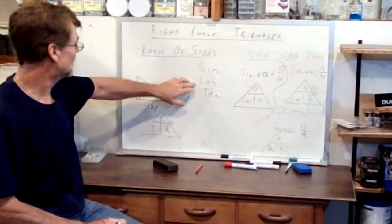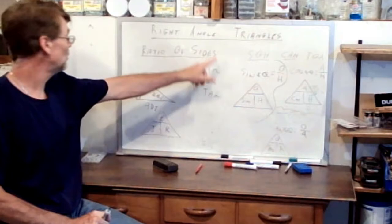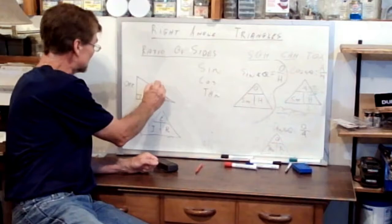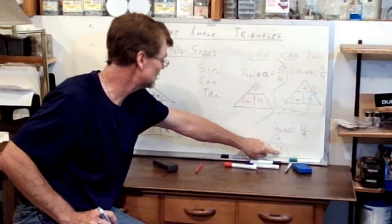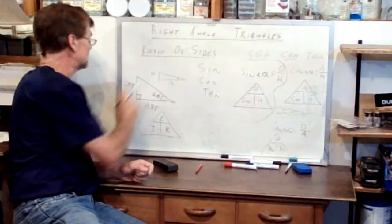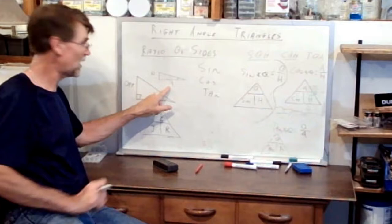So there are three functions — sine, cosine, tan — and they describe how the angle relates to the ratio between a couple of the sides. If the angle is small, let's look at tan for example: the relationship between opposite and adjacent. With a really small angle, the adjacent is a fairly big number and the opposite is a very small number. That's how the angle affects the ratio of the sides.